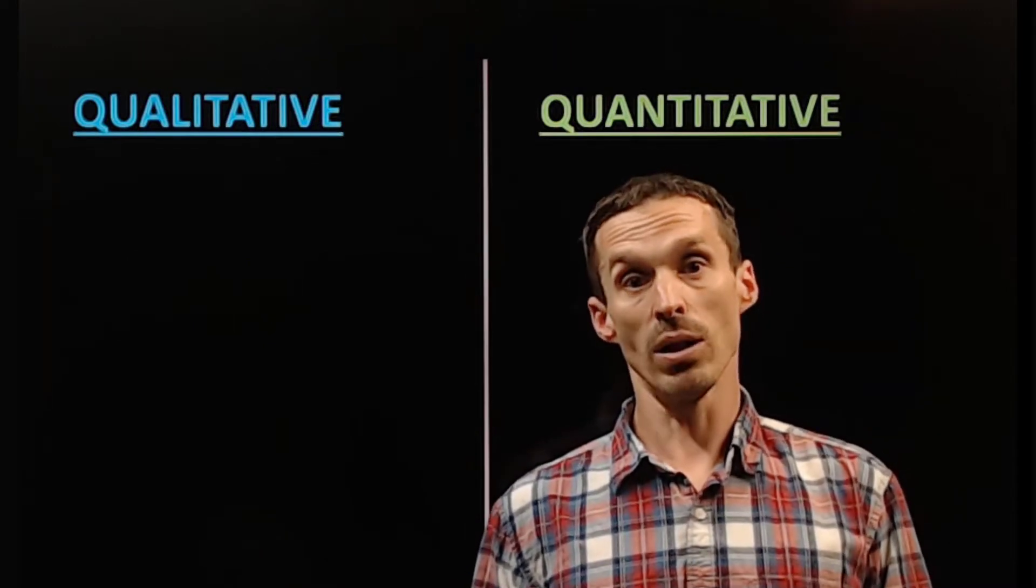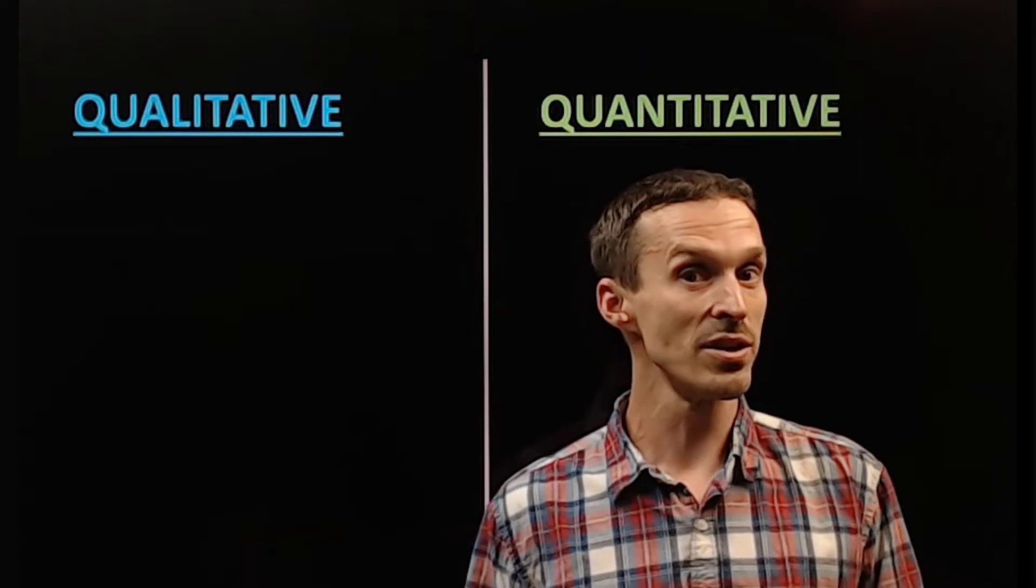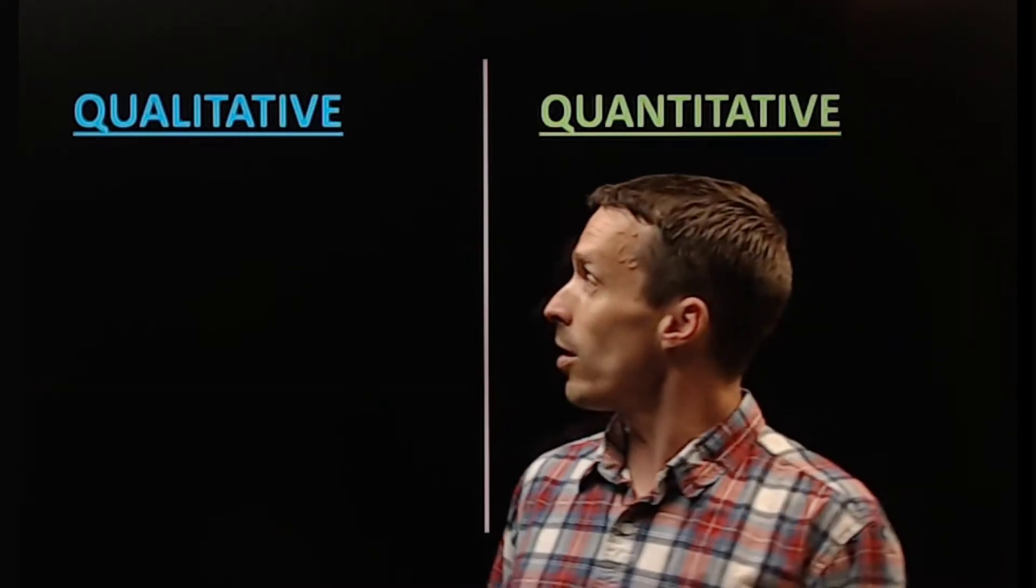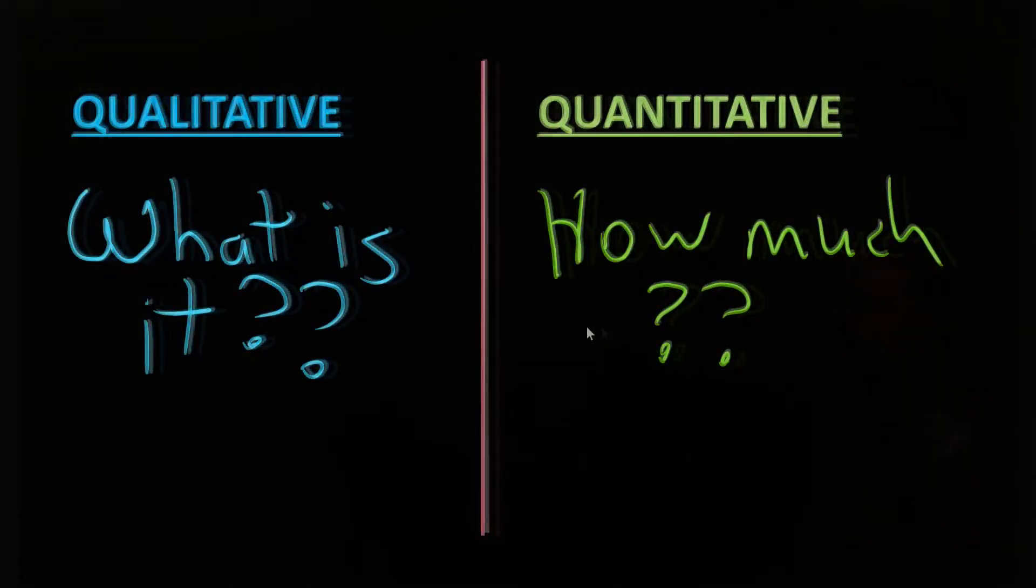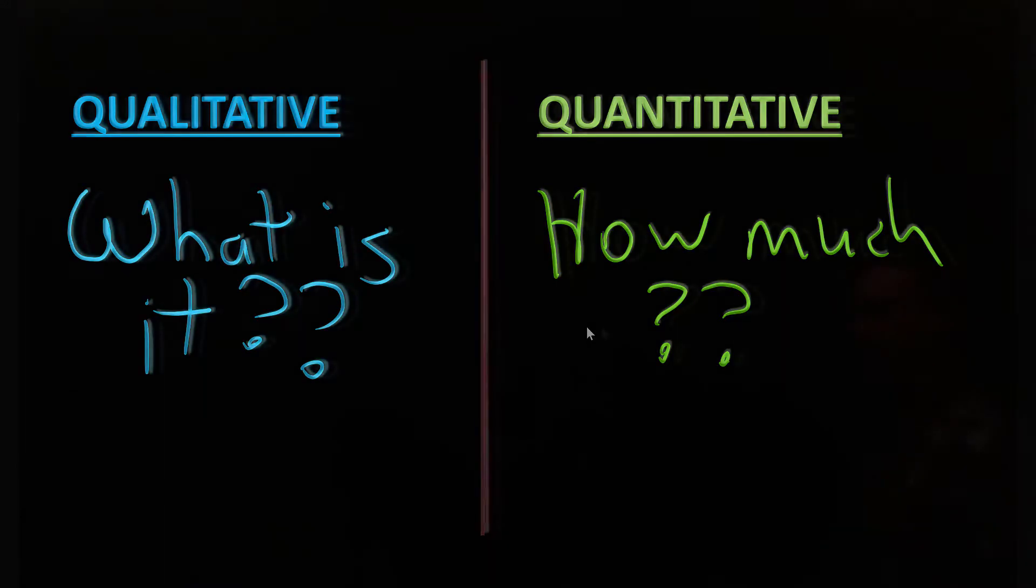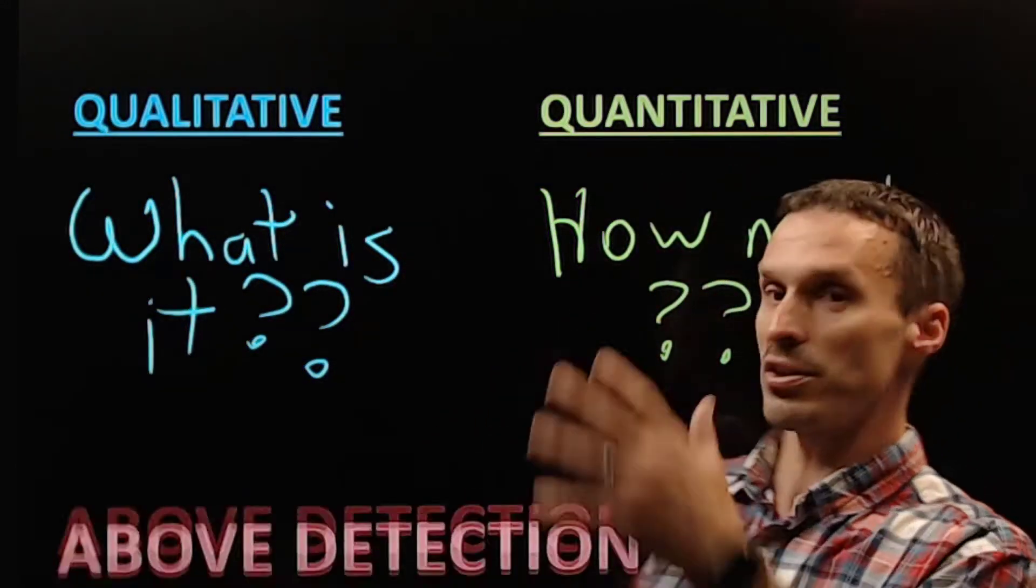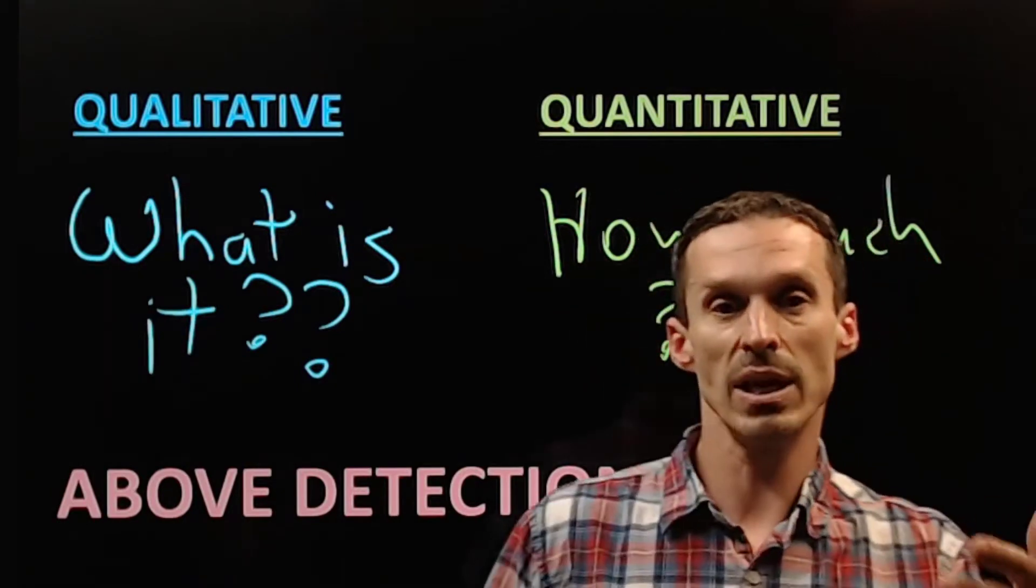For now let's talk about qualitative and quantitative analysis. These are just two of the most basic definitions of analytical chemistry and it all boils down to these questions here. Qualitative is what is our substance and then quantitative refers to how much it is. The two of them are quite closely connected because if you think about the ability to measure something to get the concentration, you need to be able to detect it.